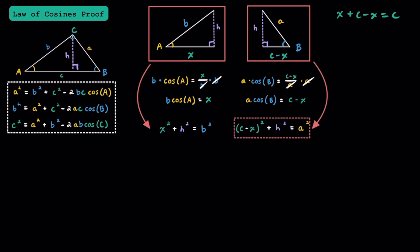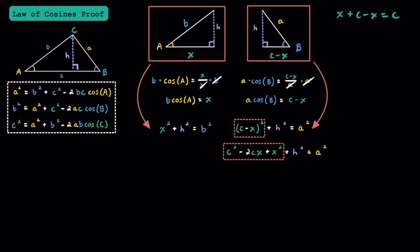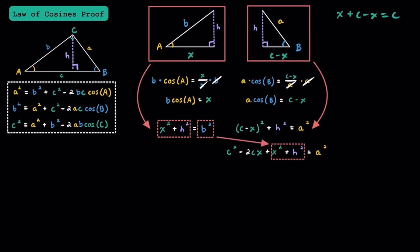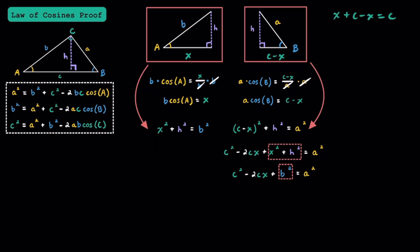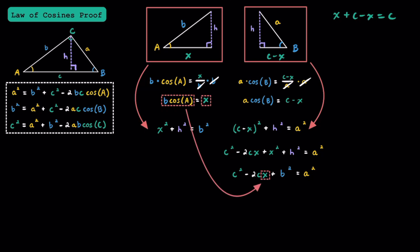Now let's focus on the right-triangle equation and foil or expand (c minus x) squared. When expanding, we get c squared minus 2cx plus x squared plus h squared equals a squared. Notice that x squared plus h squared is the same expression from the left triangle, which equals b squared. So let's substitute b squared in for x squared plus h squared, giving us c squared minus 2cx plus b squared equals a squared. Now, since we found that x equals b times cosine of A, let's substitute that in for x, giving us c squared minus 2c(b cosine A) plus b squared equals a squared.